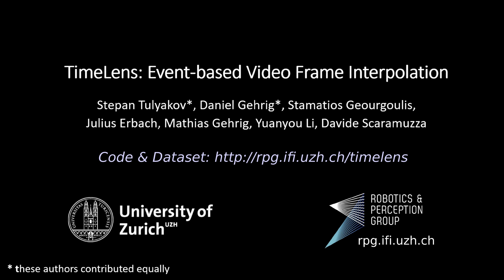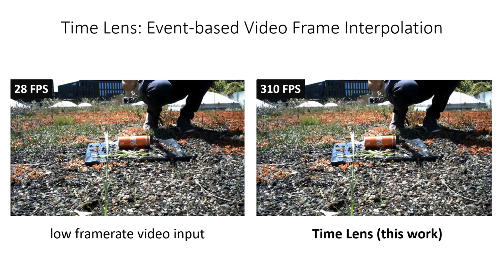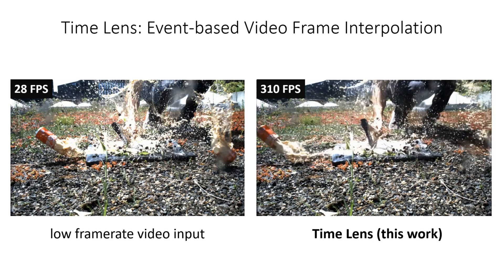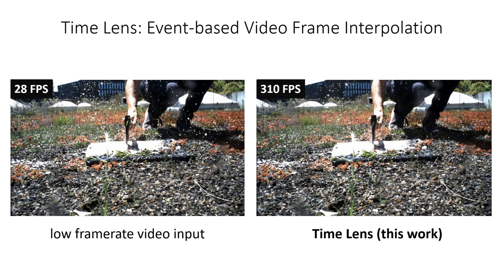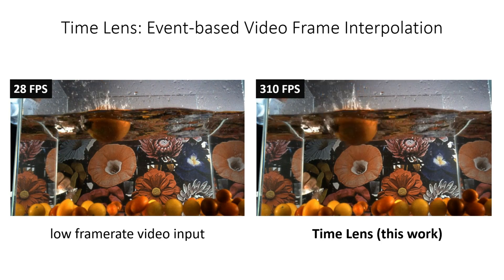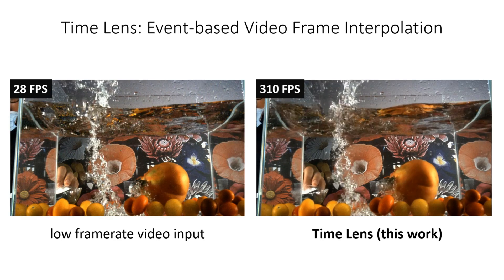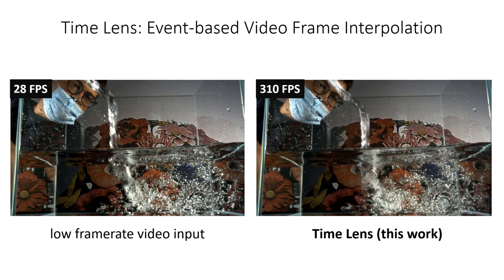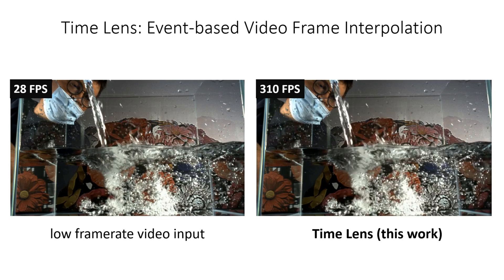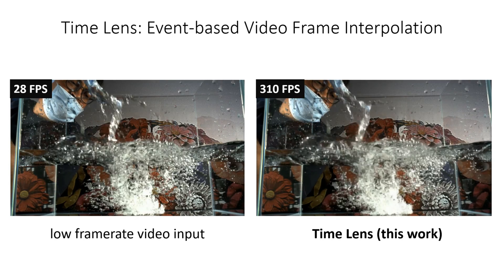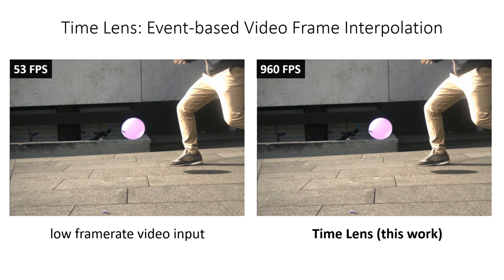We introduce Time Lens, a novel method for video frame interpolation in the wild, which excels in highly dynamic scenarios such as flowing water where classical methods fail. These scenarios are challenging since they exhibit large and highly non-linear motions, complex occlusions, and illumination changes due to specularities and other effects.